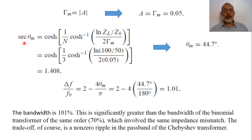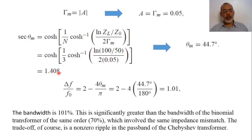θ_m can be determined from the relation: sec(θ_max) = cosh[(1/n)·cosh^{-1}(|Z_L − Z_0| / (2γ_m · Z_0))]. With Z_load = 100 ohm, Z_0 = 50 ohm, and γ_m = 0.05, taking cosh^{-1} of this value, multiplying by 1/3, and taking the cosh, we obtain sec(θ_max) = 1.408.